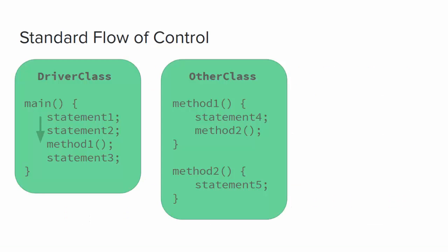So what is the standard flow of control? When you launch a new program, the program begins in the main method of the driver class. The runtime environment executes statements in consecutive order until it reaches the last line of main and the program exits. Between the beginning and end of main, the flow may branch, it may loop, it may move to methods and other objects, but statements are still executed in sequential order working toward completion and exiting at the end of main.